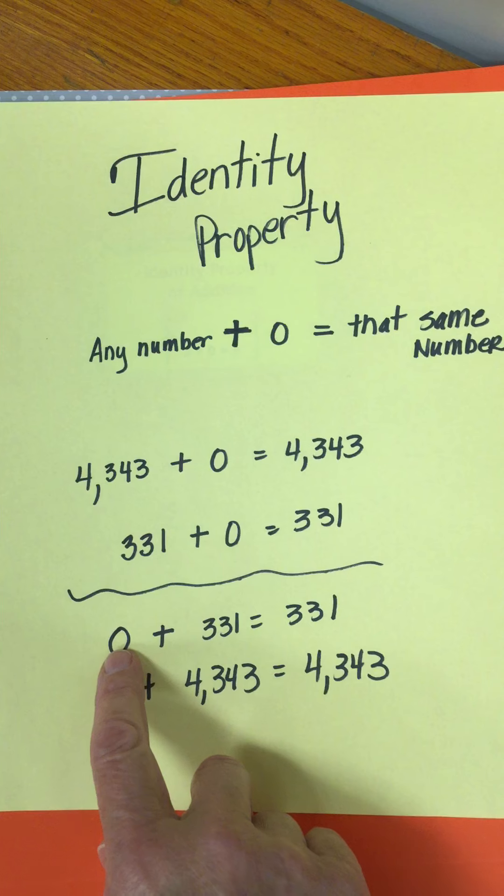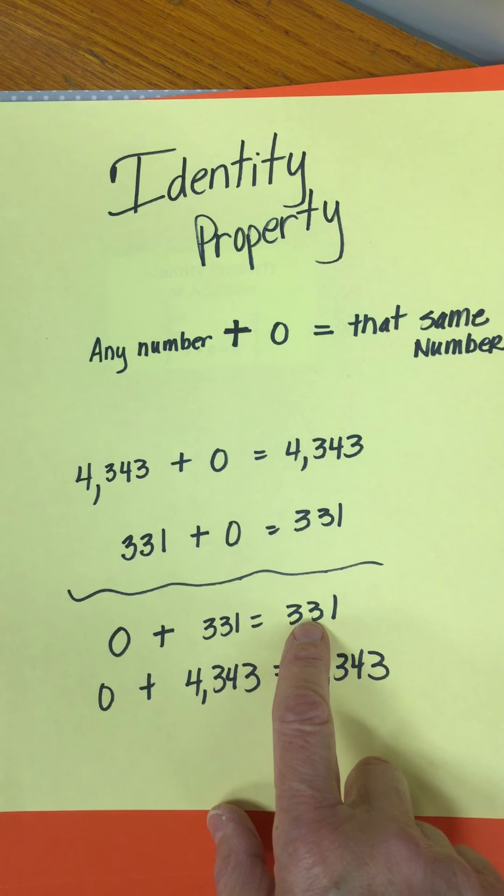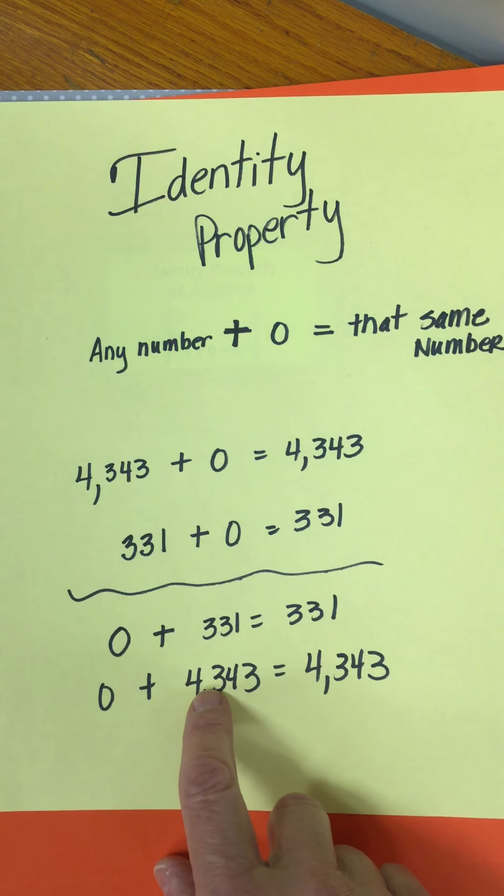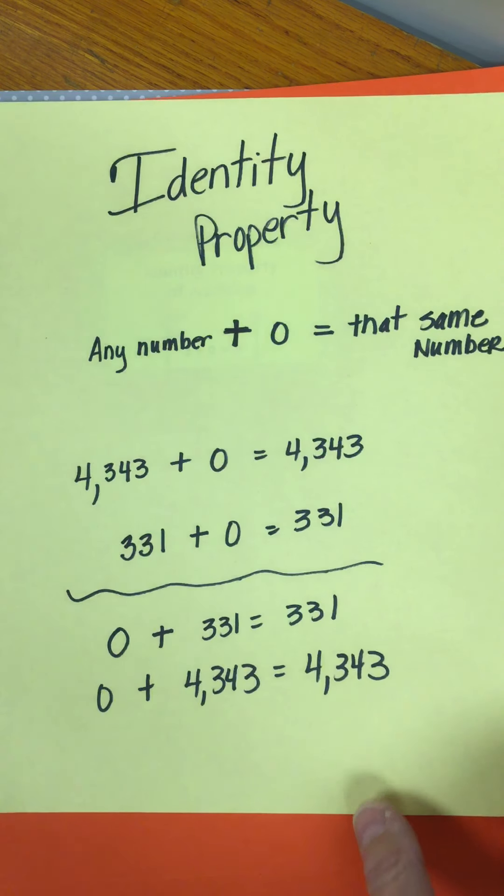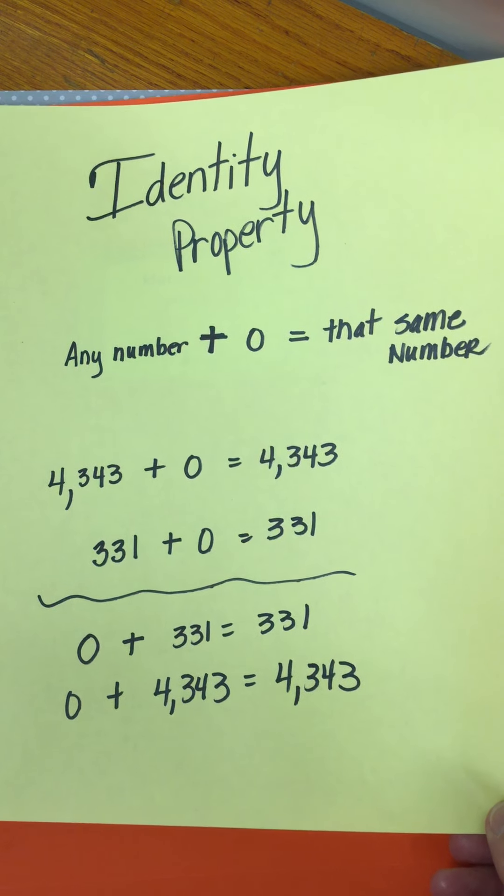And down here I change the order. I put the zero first. Well it doesn't matter, right? It's still that number 331 and 4,343. So that identity that involves zero and adding zero, that one's probably the simplest one.